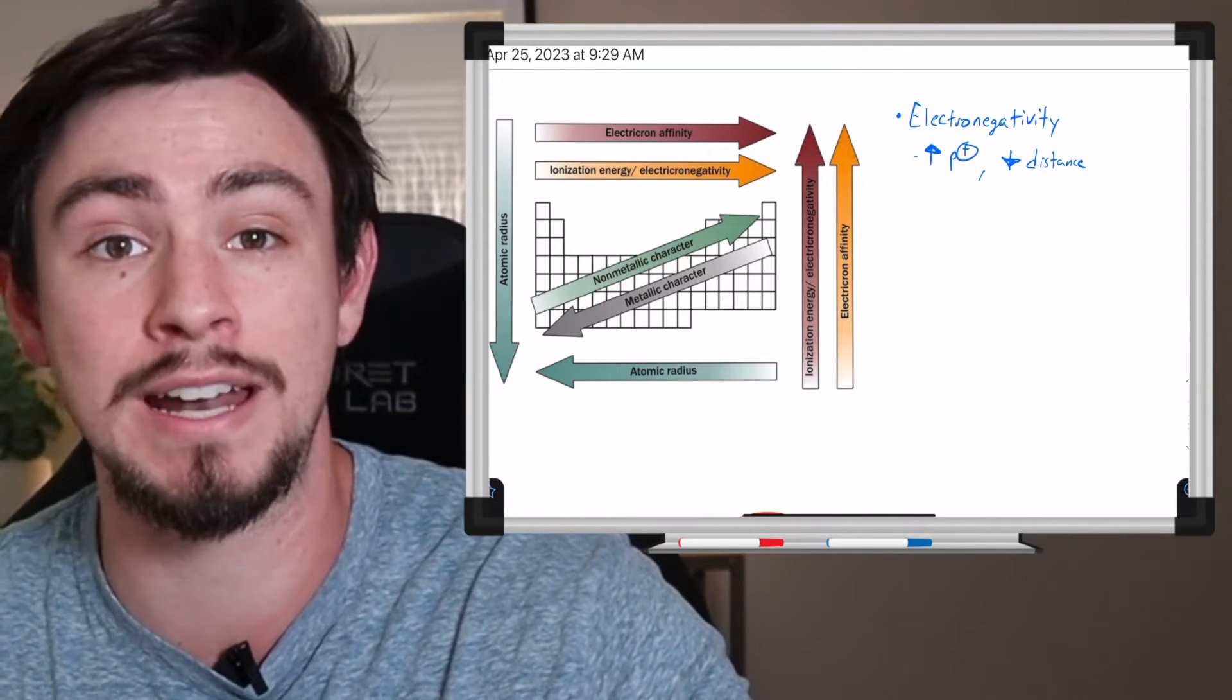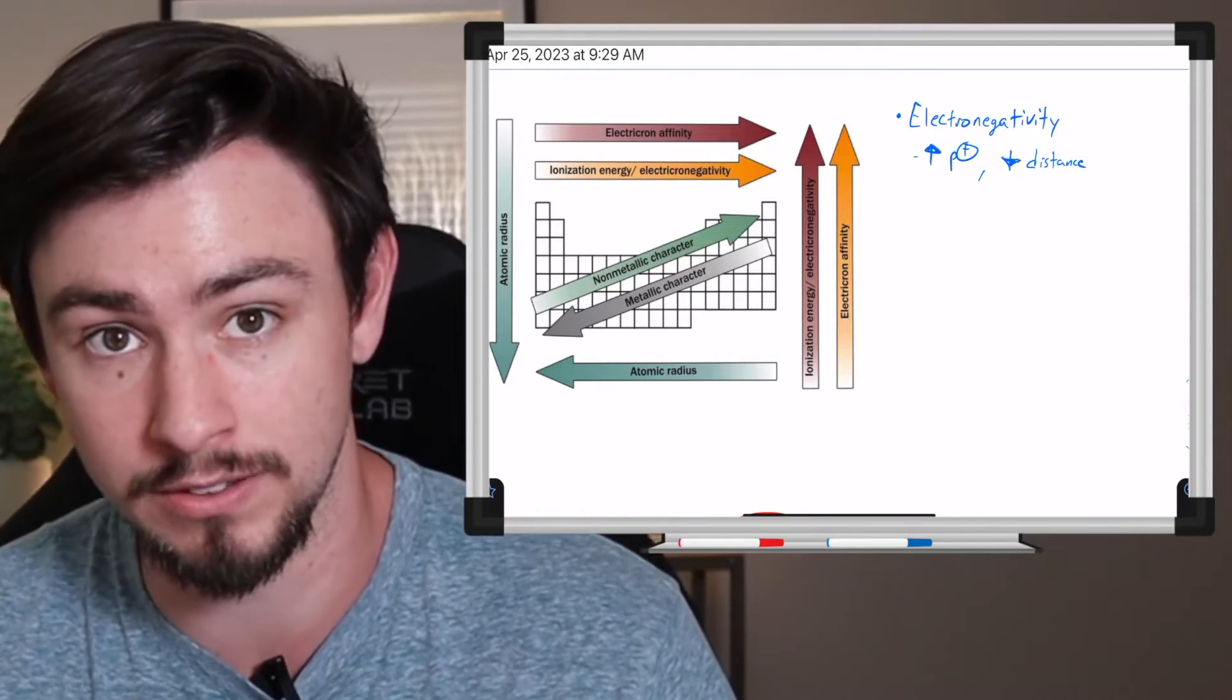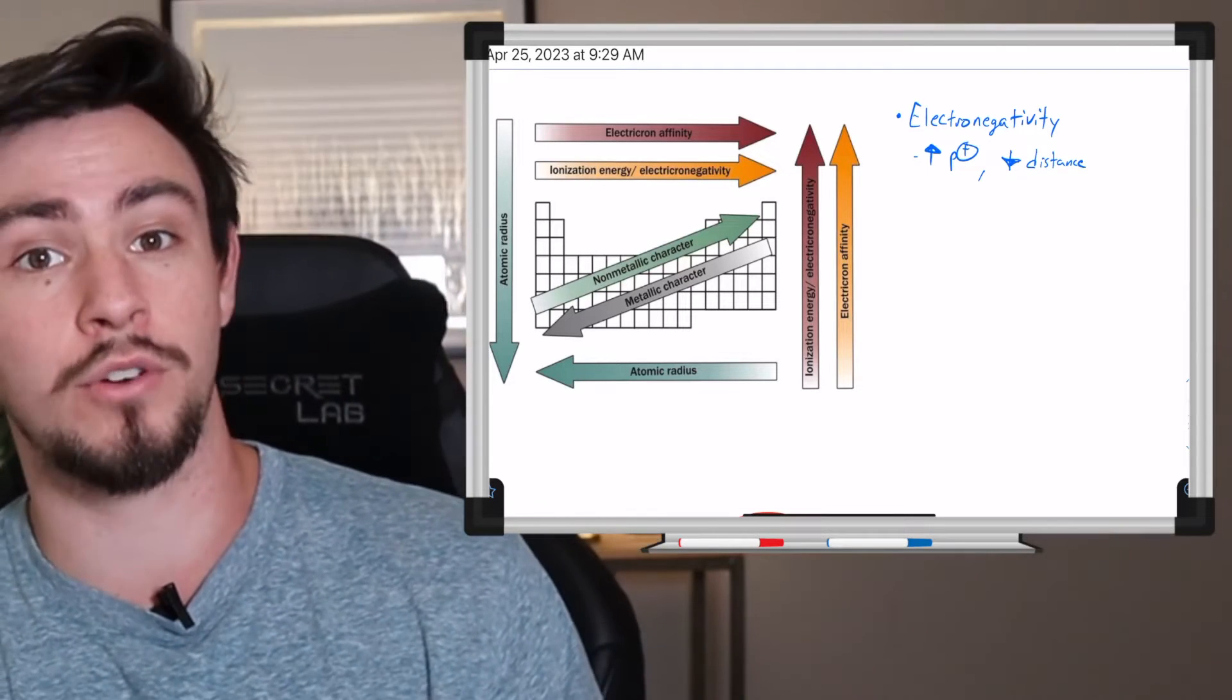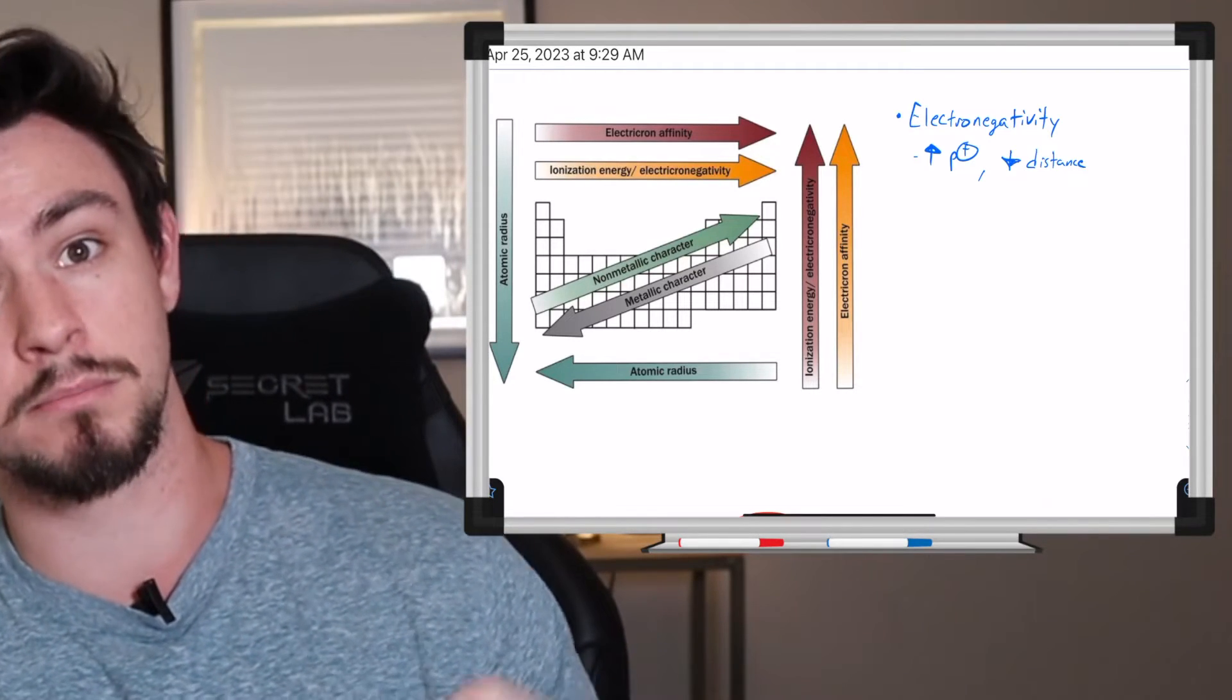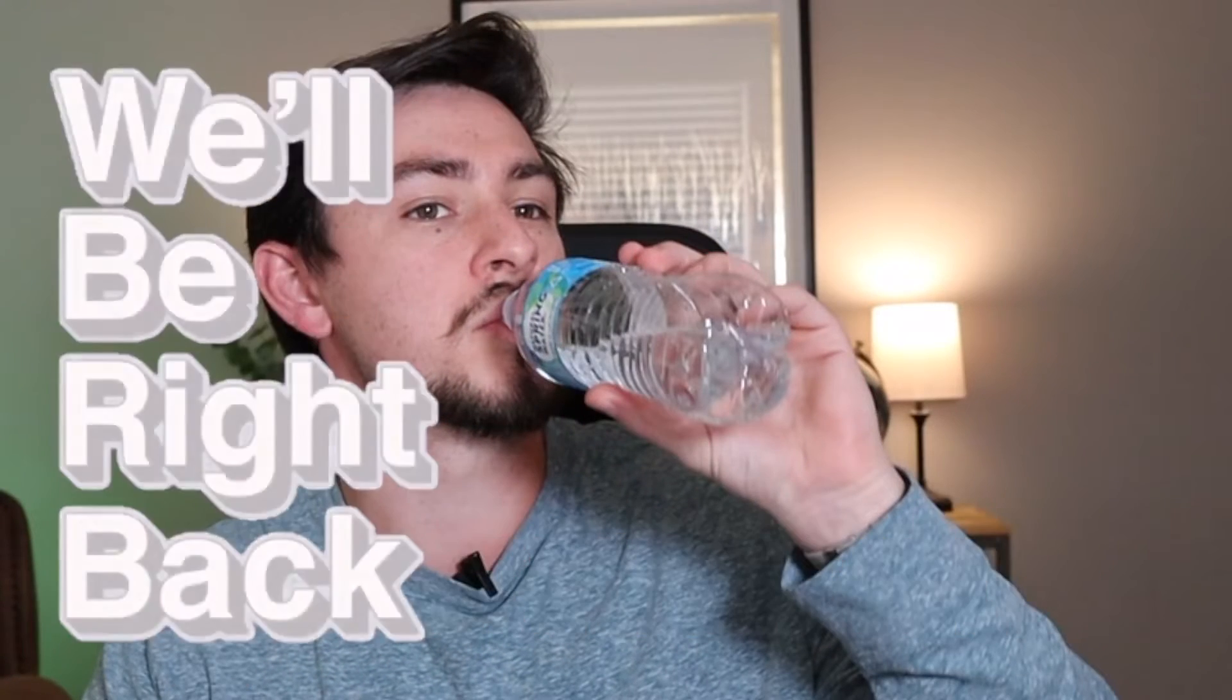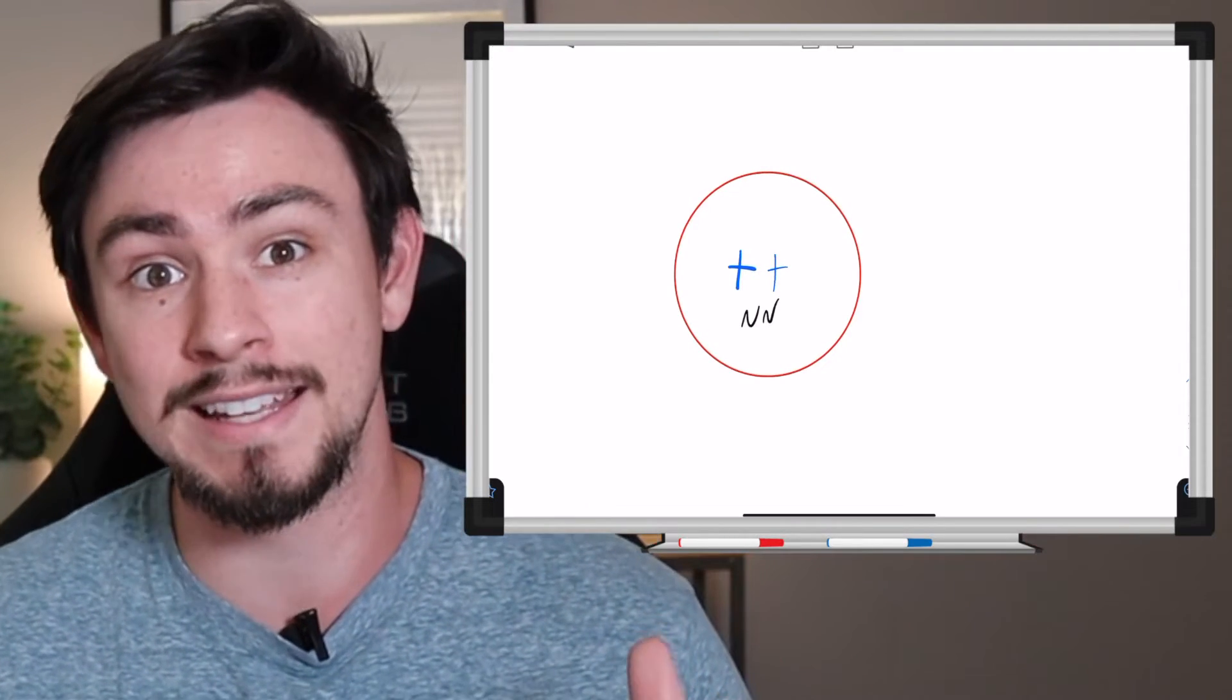What is electronegativity? It is the tendency for an atom to attract or hold on to electrons. Now, electrons are these negative charges, right? What attracts negatives? Positives, right? Opposites attract. That's what my parents used to tell me before their divorce.